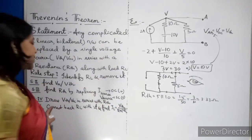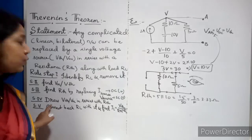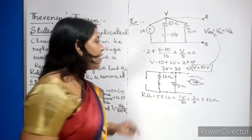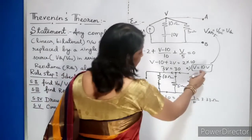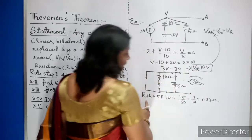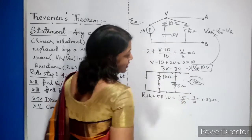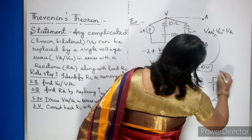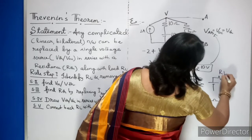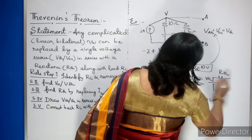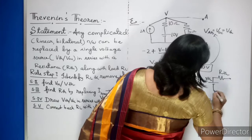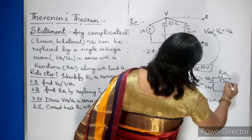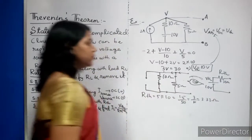Step 4: Draw VTH in series with RTH. You have found VTH = 10 volts and RTH = 3.33 ohms. Draw this Thevenin equivalent circuit — RTH in series with VTH.